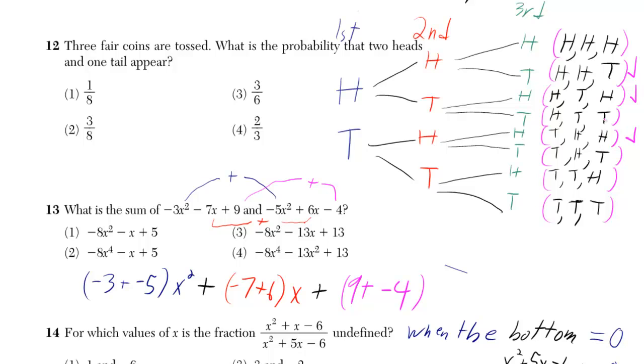Now, how could you have done this quicker without a tree diagram? When you're only trying to get one tail to appear, it can be in the last slot, it can be in the middle slot, or it can be in the first slot.